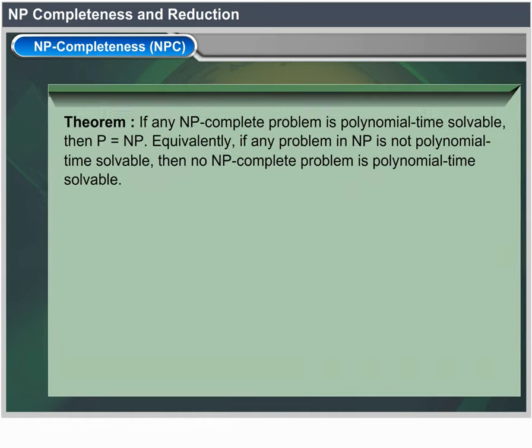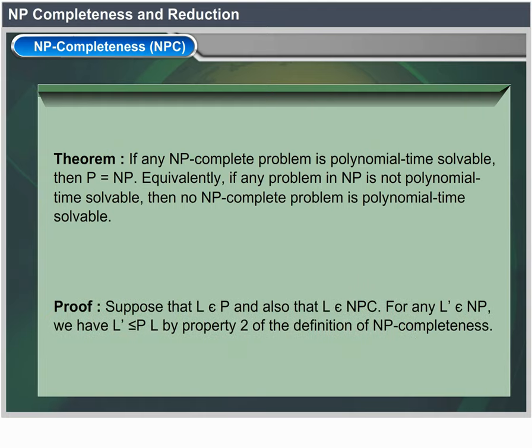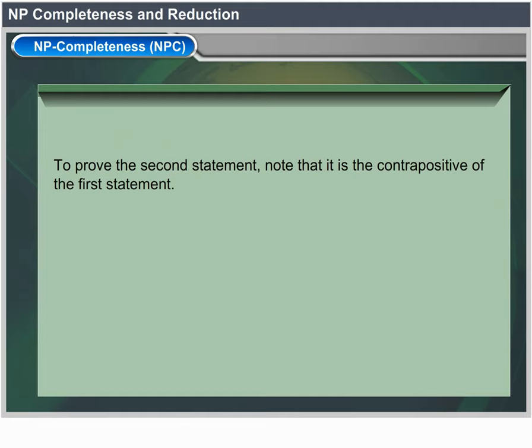Theorem: if any NP-complete problem is polynomial-time solvable, then P = NP. Equivalently, if any problem in NP is not polynomial-time solvable, then no NP-complete problem is polynomial-time solvable. Proof: suppose L ∈ P and L ∈ NPC. For any L' ∈ NP, we have L' ≤_p L by property 2 of the NP-completeness definition. Thus L' ∈ P, proving the first statement. The second statement is the contrapositive of the first.